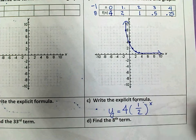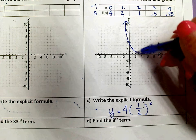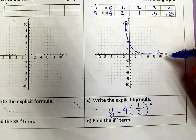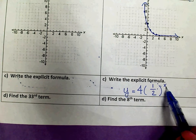Which we knew that since 1 half is less than 1, this would have been a decay, which is what this shows going down. And now I can use this to find my eighth term.